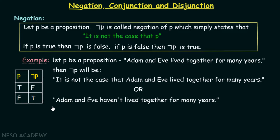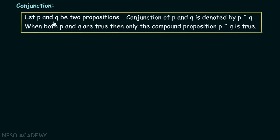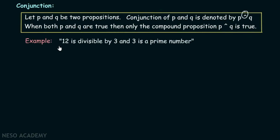Now let's understand the conjunction operator. Let p and q be two propositions. The conjunction of p and q is denoted by p ∧ q. This is the symbol for 'and' in propositional logic. When both p and q are true, then only the compound proposition p ∧ q is true. For example: 'Twelve is divisible by three' and 'three is a prime number.' Both are true, so true ∧ true equals true.